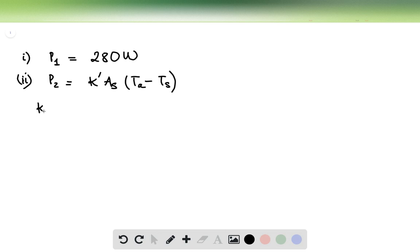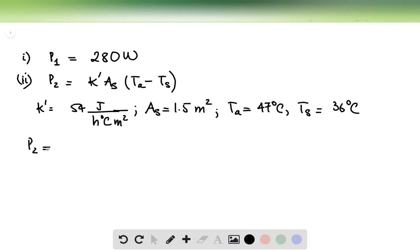And we are given that K prime is equal to 54 joules per hour degrees Celsius meters squared, and the area of the skin is equal to 1.5 meters squared. The air temperature is equal to 47 degrees Celsius, and the skin temperature is equal to 36 degrees Celsius. So from these numbers, we can plug in this formula and calculate P2.